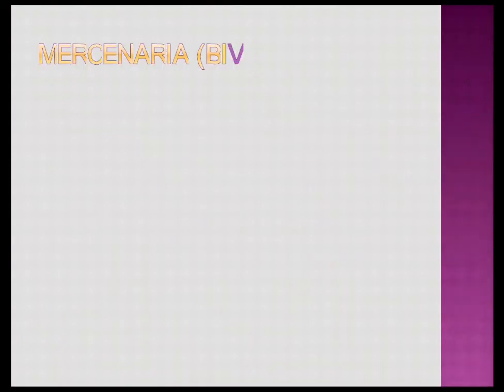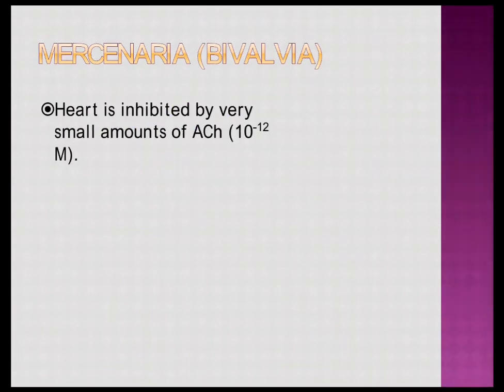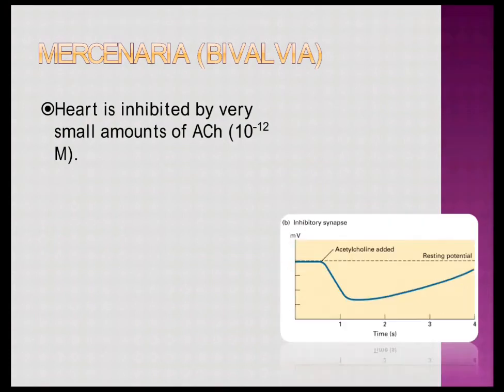Now taking another example — Mercenaria, a bivalve mollusk belonging to the phylum Mollusca. Mercenaria has a myogenic heart, and myogenic hearts are generally excited by ACh. However, here the heart is inhibited by very small amounts of ACh — even at a concentration of 10 to the minus 12 moles it is inhibited. This is a very strange behavior shown by the heart of Mercenaria.